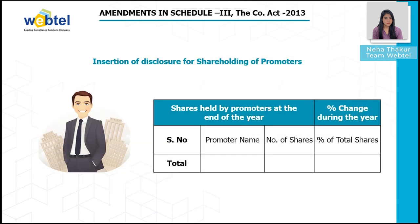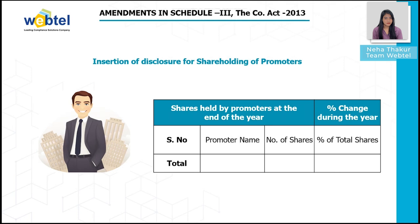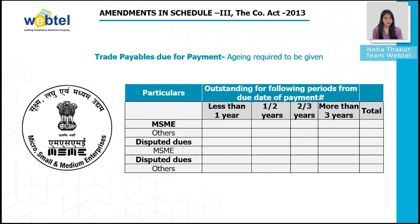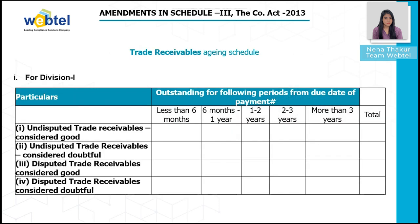The next amendment is the insertion of disclosure for shareholding of promoters. Disclosure of promoter shareholding and percentage change during the year has been added for all companies. Additionally, for trade receivables aging schedule under Division 1, you have to disclose the details in the specified table. Similarly, for transactions where no due date of payment is specified, disclosure shall be made from the date of the transaction, and unbilled dues shall be disclosed separately.